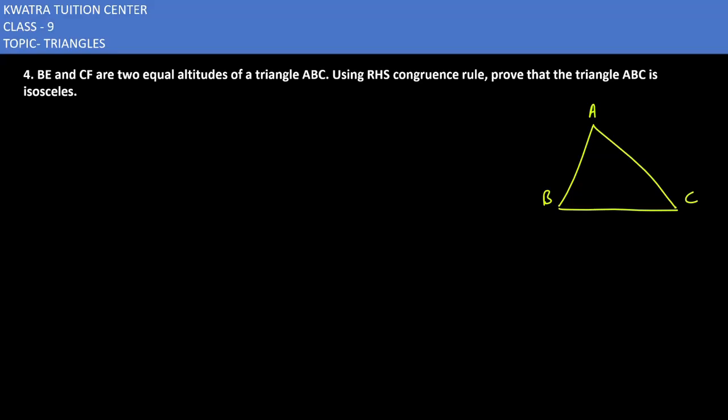Let's start with the fourth one. It says BE and CF are two equal altitudes of triangle ABC. Using RHS congruency rule, prove that triangle ABC is isosceles.